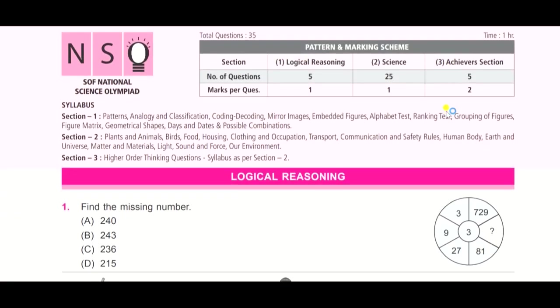First question: find the missing number. Look at the wheel here, you need to find the missing number in place of the question mark. Option A is 240, B is 243, C is 236, and D is 215. So think about your answer.